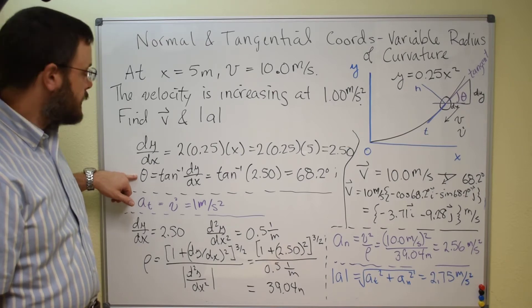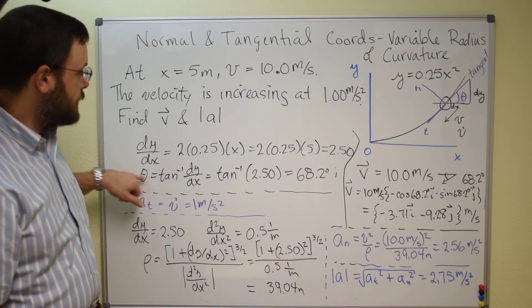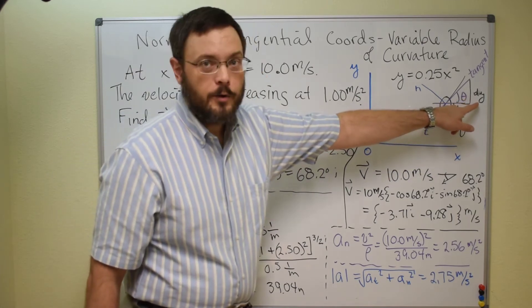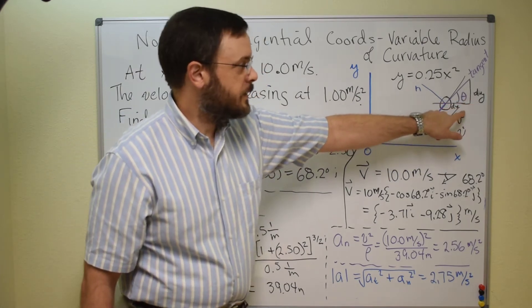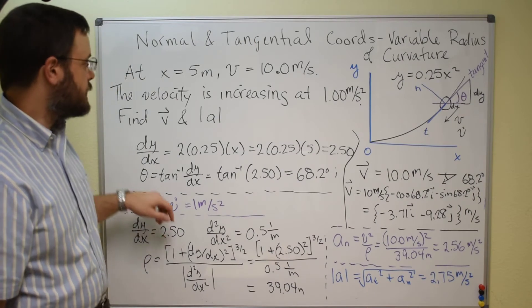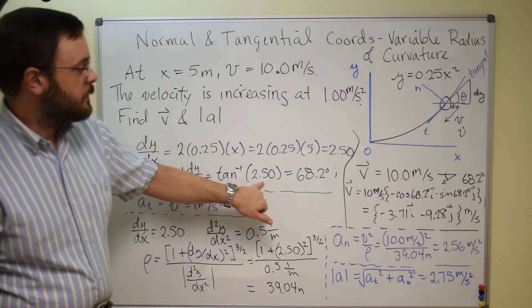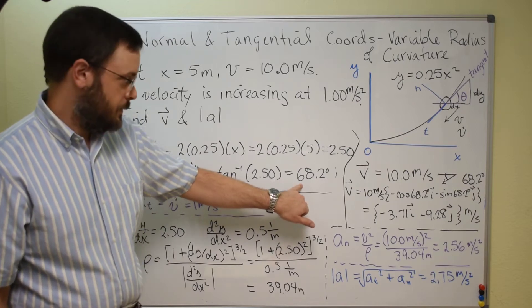Then we can get our angle theta then as the inverse tangent of dy over dx, because we have dy over here, which is our opposite side, divided by dx, which is our adjacent side. So the inverse tangent then of 2.50 gets us 68.2 degrees.